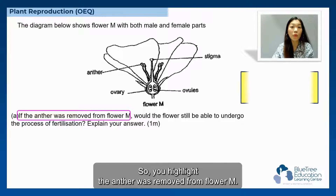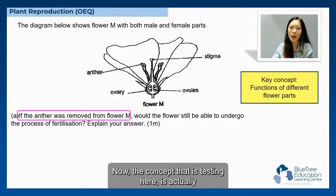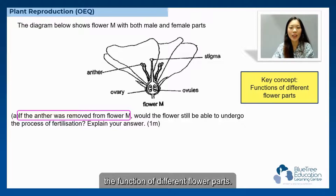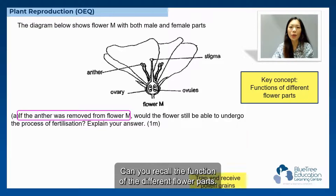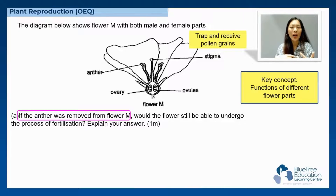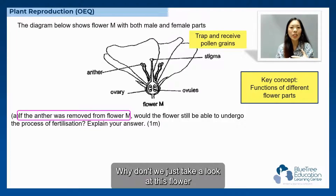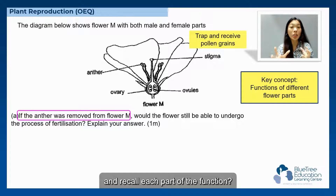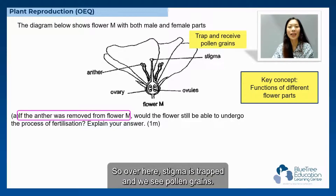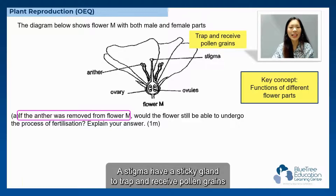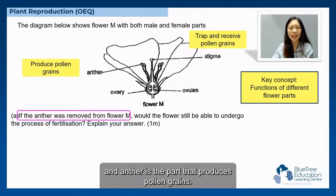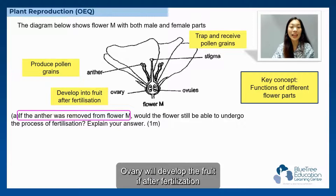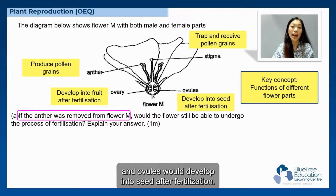We highlight that the anther was removed from the flower. The concept being tested here is the function of different flower parts. The stigma has a sticky surface to trap and receive pollen grains, and the anther is the part that produces pollen grains. The ovary will develop into fruit after fertilization, and the ovule will develop into seed after fertilization.